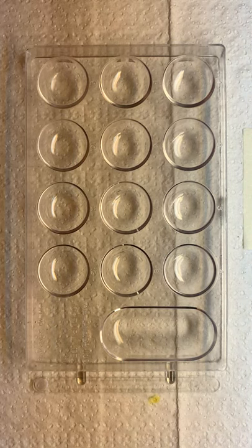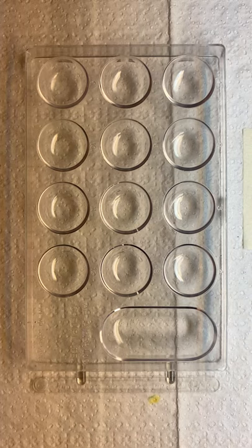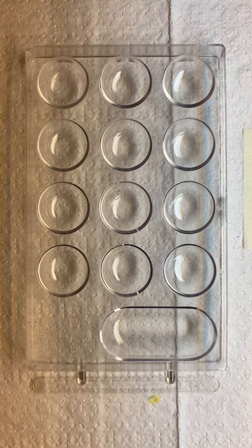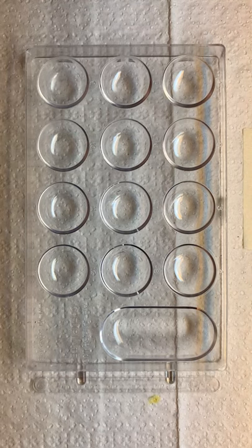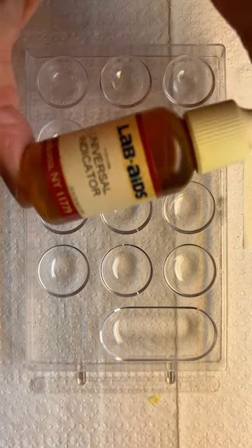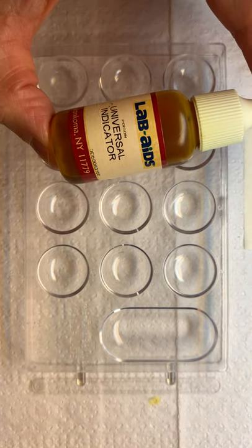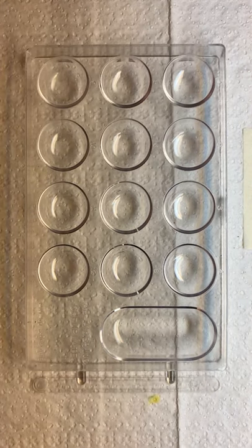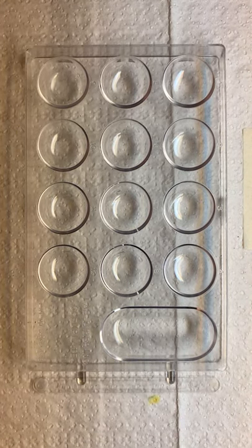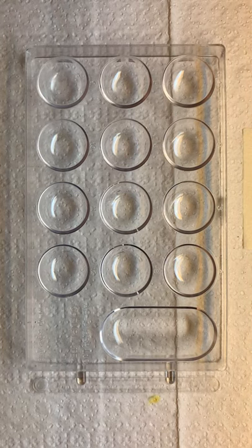So Activity 3 is called determining a color standard, which means a key or a guide, using the universal indicator. Now we're going to switch over from those bromthymol blue and the methyl orange and the phenolphthalein to this thing called the universal indicator. You remember that this one has the full range between 0 and 14. But again we only have the odd numbers so we're going to test the odd number ranges.